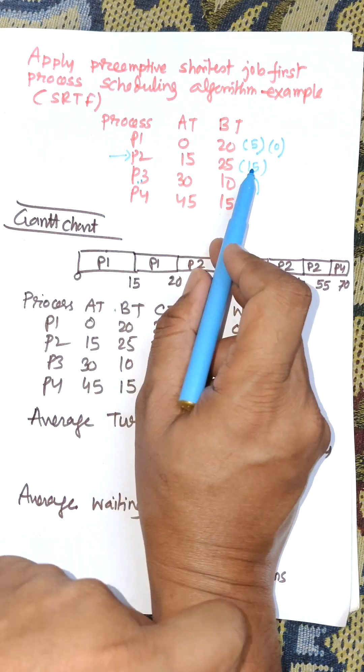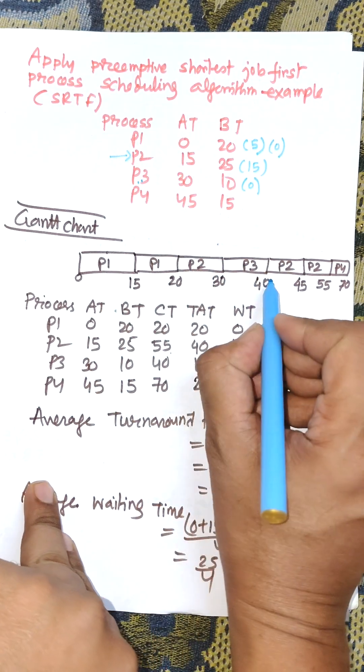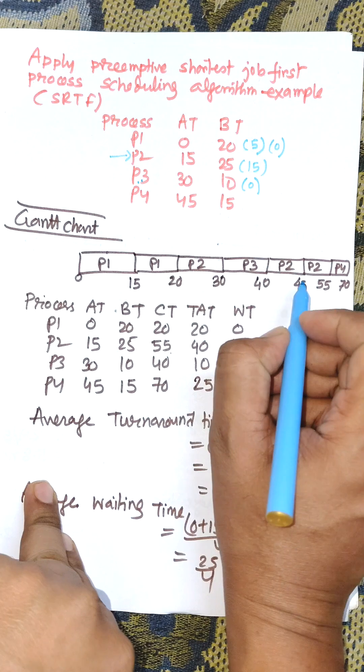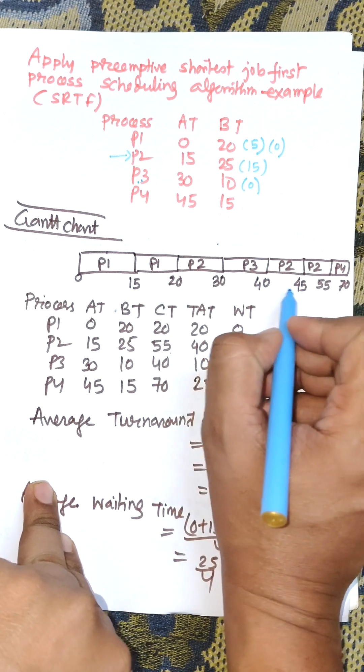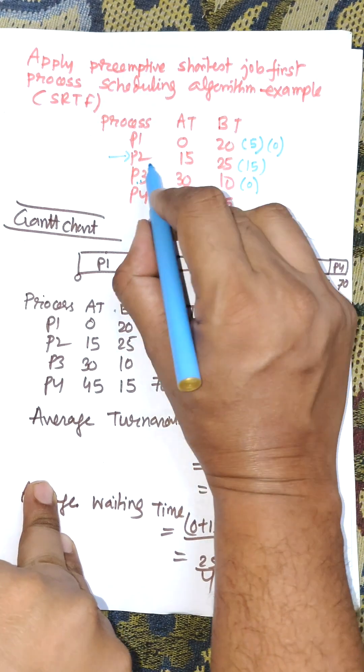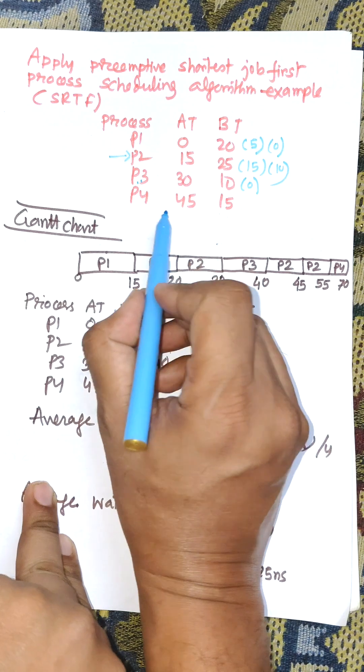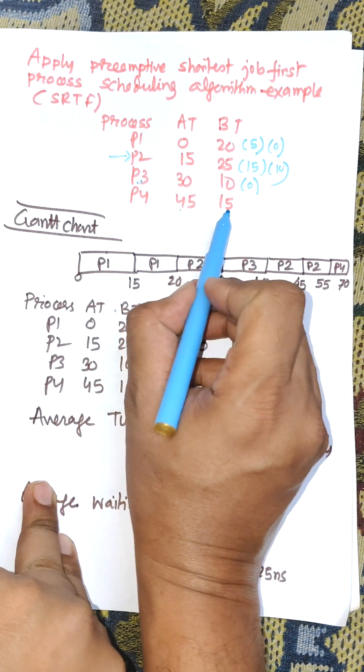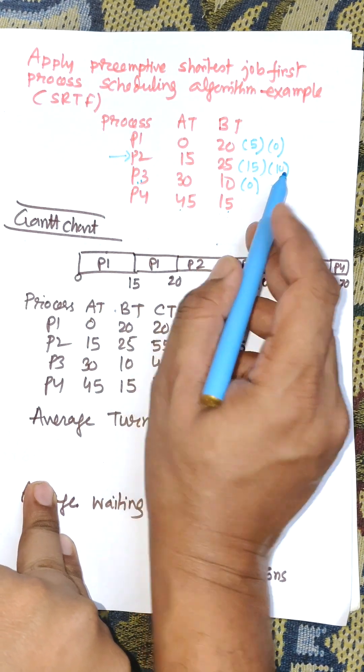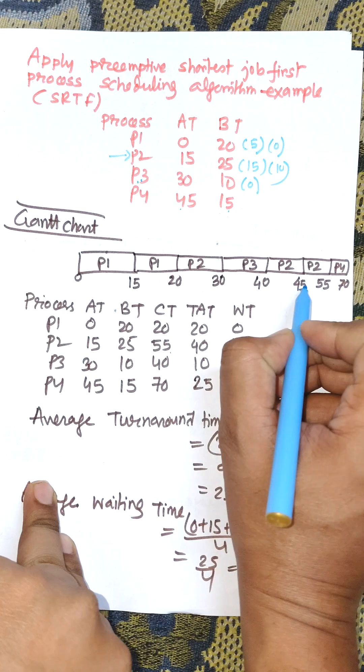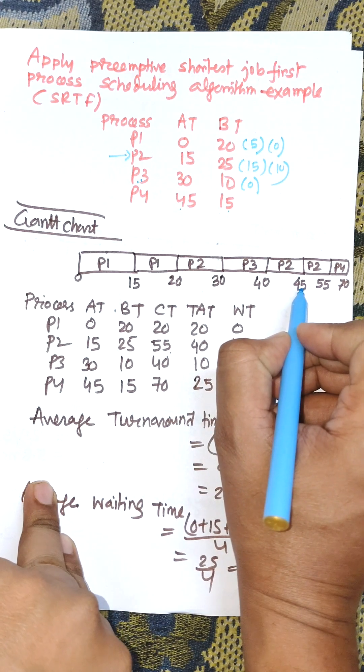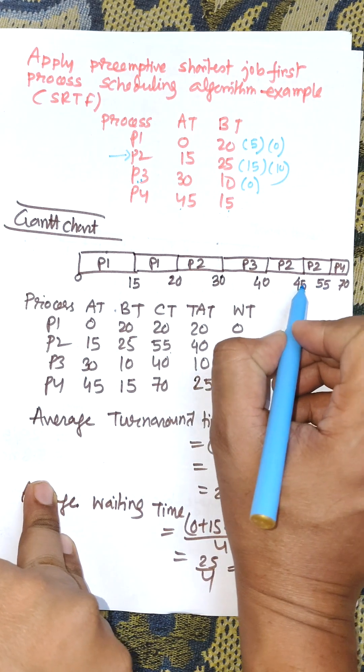P2 will continue its execution up to 45. At time 45, P4 arrives with burst time 15 and the remaining time for P2 is 15. So P2 will be selected again and it will continue execution.